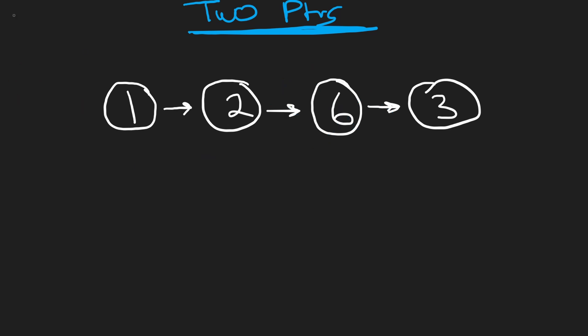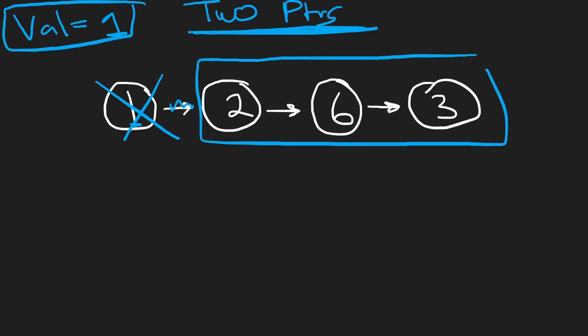But what if the value that we want to delete happens to be 1? That's the first value over here. So in that case, what we would do is get rid of this node, we don't really have to update any pointers, and then this is our new list. So we have to return a head, and this is a new head now. Like this is not the same head that we had originally in the input.